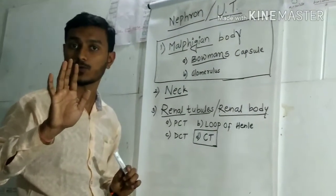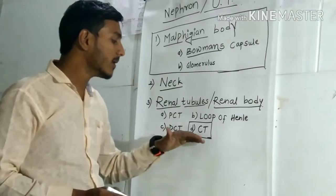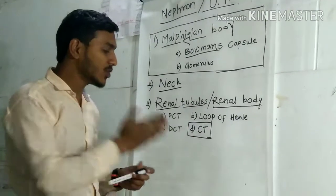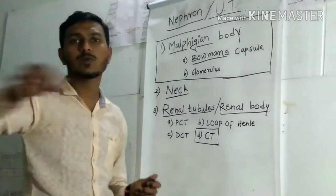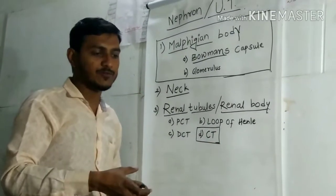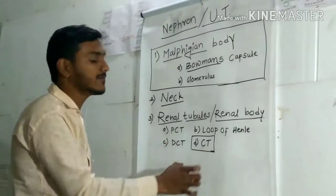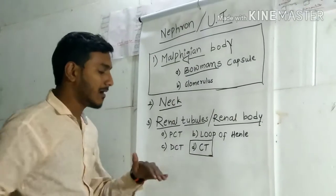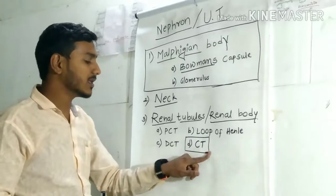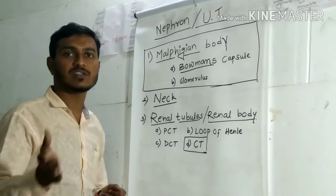After the DCT comes the collecting tubule (CT). The collecting tubule is part of the nephron, and it is included in the excretion process, but it does not have any active role in excretion. It is only used as a tubule for excretion, and one additional function is that it may absorb water whenever the body needs it.